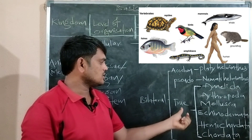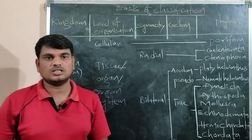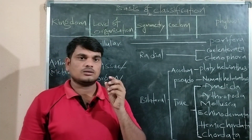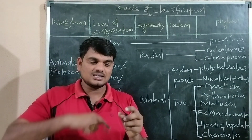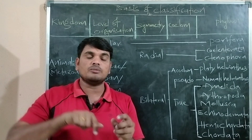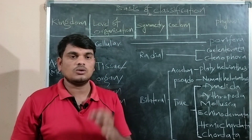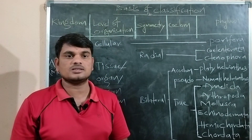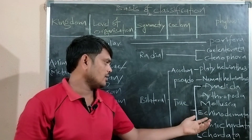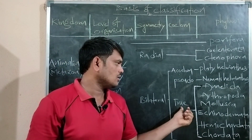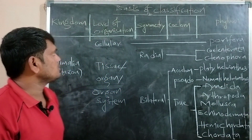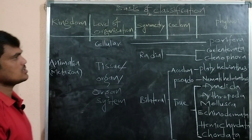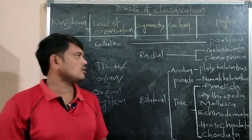Annelida and other higher phyla up to Chordata exhibit true coelom — the coelom is internally lined by the mesodermal layer, so it is clearly visible. This is something about the basis of classification. That is enough for today.